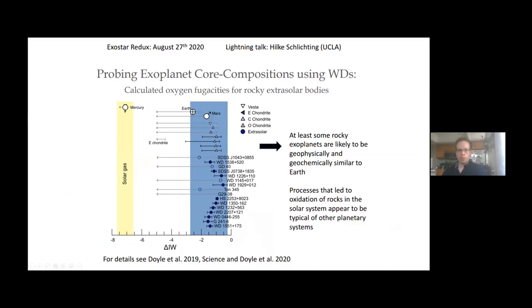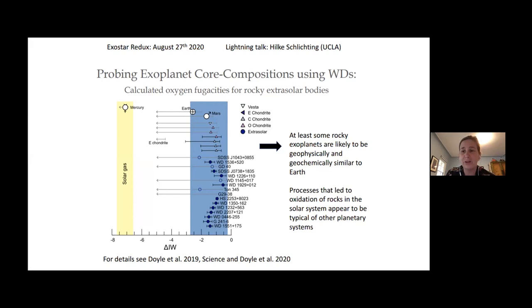Our last talk is by Hilke Schlichting. This is going to be a hybrid between session three and session four — basically using polluted white dwarfs to dissect rocky material, maybe rocky planets, and do some geochemistry. There are about 12 white dwarfs for which you can measure all the major rock-forming elements plus oxygen and iron, and this allows us to do geochemistry of the rocks being accreted. Specifically, we calculate oxygen fugacity — a measure of the oxidation state of the rocks.